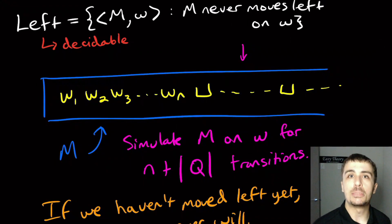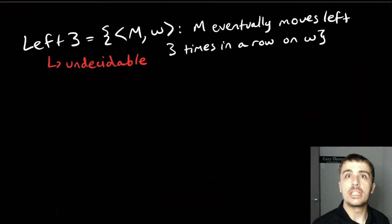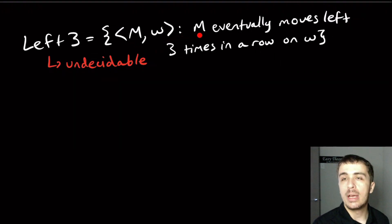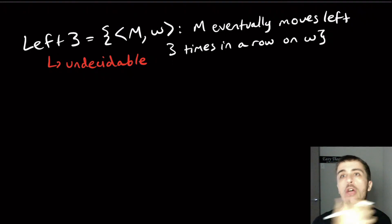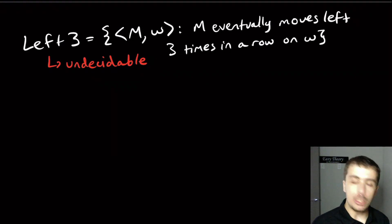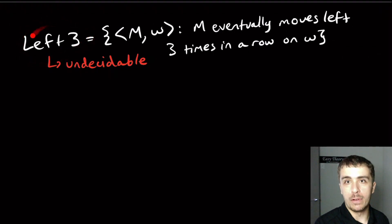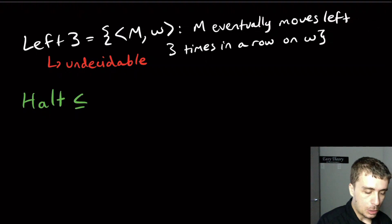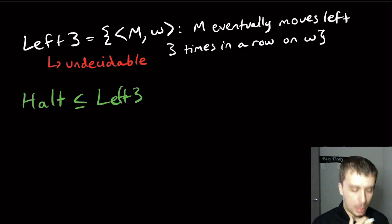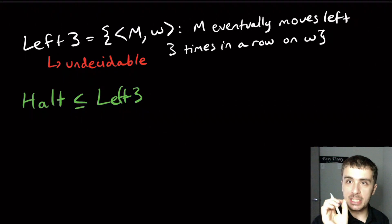Now let's prove LEFT3 is undecidable — where M and input W are such that M eventually moves left three times in a row on W. The problem is this is an arbitrary Turing machine and we know nothing about it. What we're going to do is solve the halting problem using a supposed solver for this — in other words, we reduce the halting problem to LEFT3.